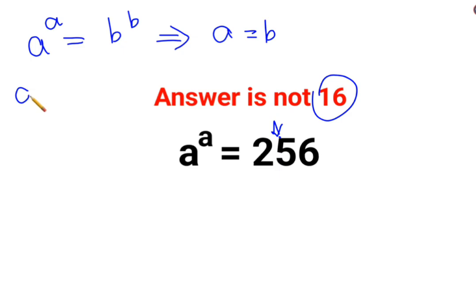Now, at this point, we have A raised to A, which is 256. Now, 256 can be written as what? 16 square.